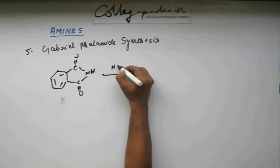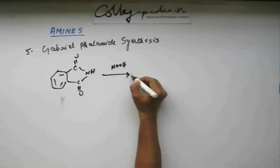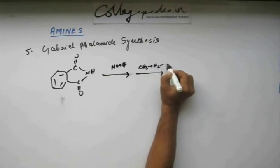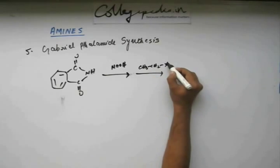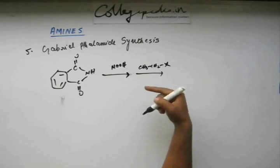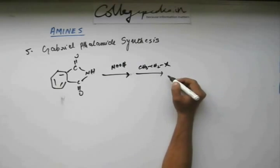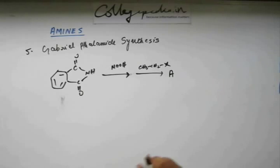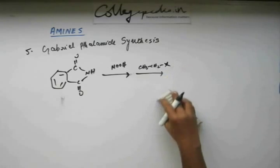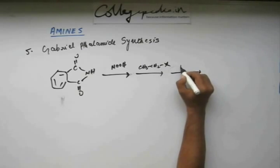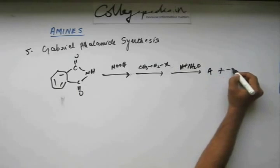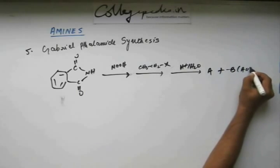On this phthalimide, I added a base, and then I added chloroethane. Suppose excess chloroethane, or in general I added any haloethane. I got A. No, I didn't get A yet. After that I carried out hydrolysis, so I got A and I got B. B is an acid.